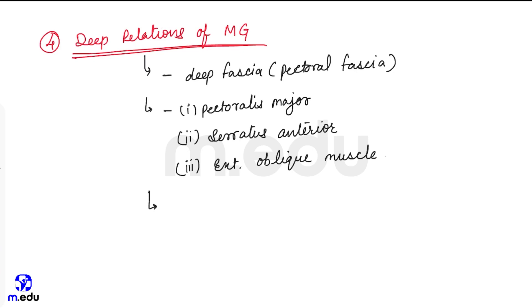Third structure which is related to mammary gland is retromammary space. The breast is separated from the pectoral fascia by loose areolar tissue called as retromammary space.